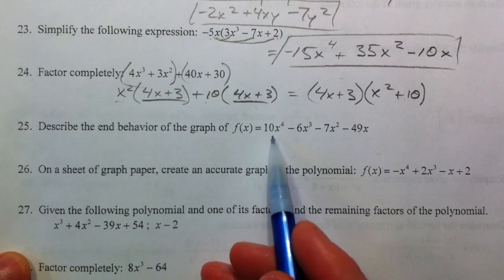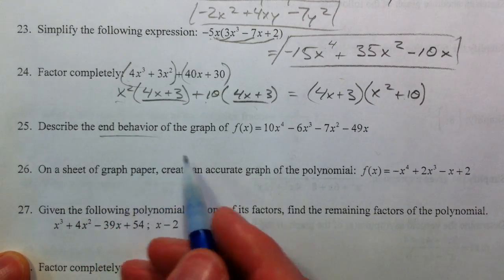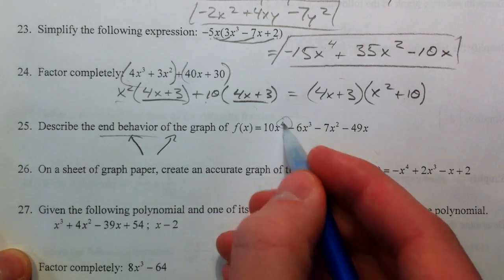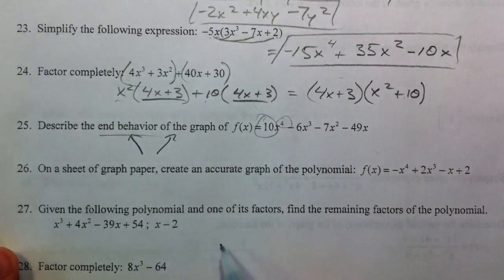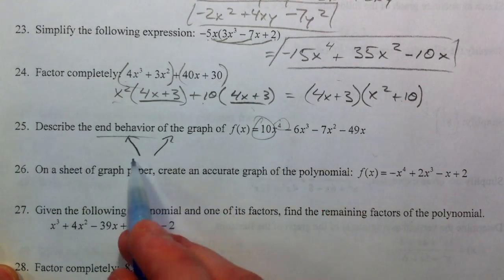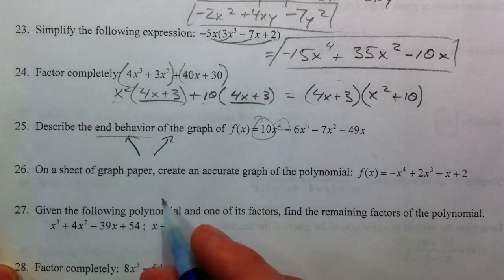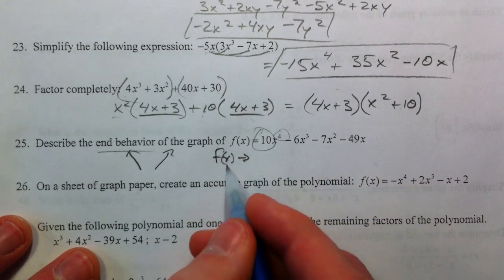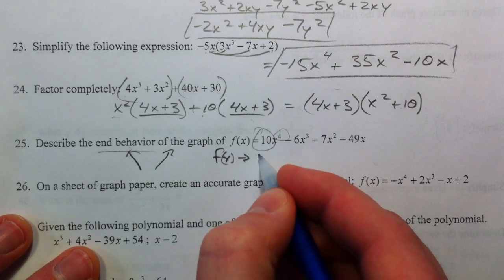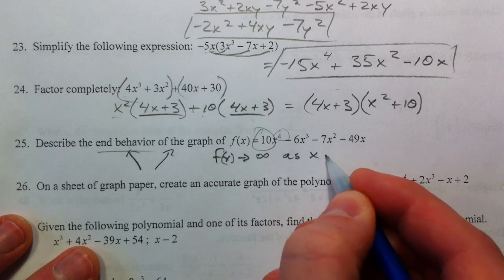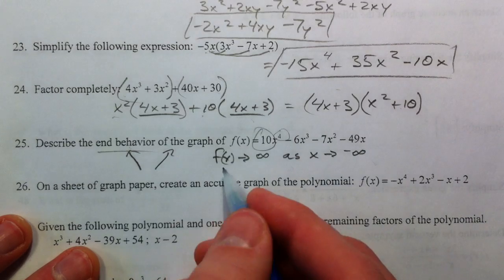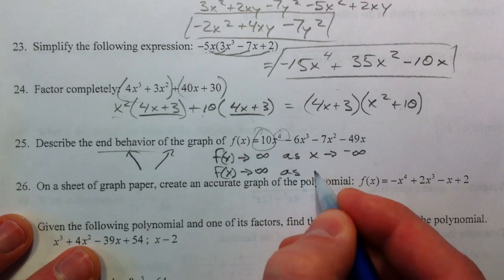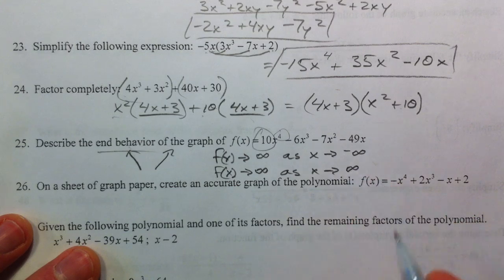Describe the end behavior of the graph. You can type this into your calculator, and all we're talking about end behavior is what does it do to the left, and what does it do to the right? This one is going to go up to the left and up to the right, because it's a fourth degree polynomial, and it's positive. Because of that, it's even, and so it's going to behave like a positive parabola. It's going to go up to both sides. And so we did that by saying, how we described end behavior, was by saying f of x, your y value goes up to positive infinity as you go to the left. So as x goes to negative infinity.